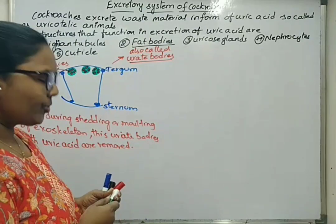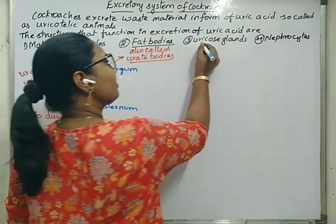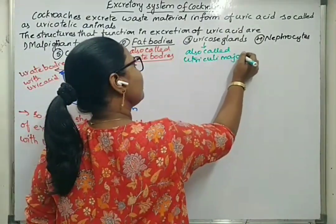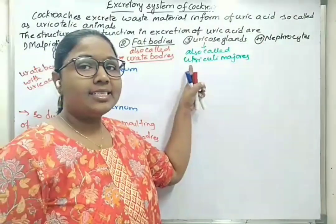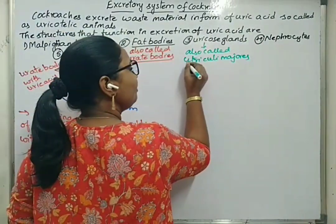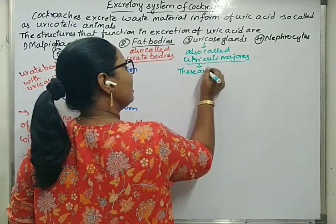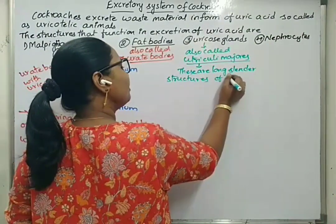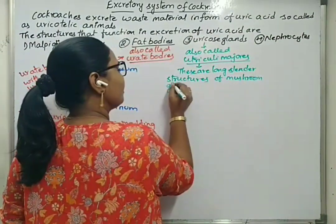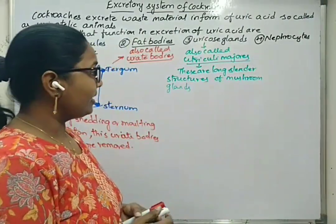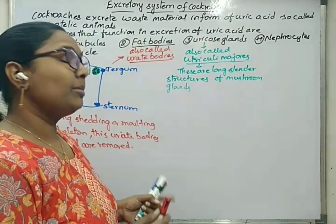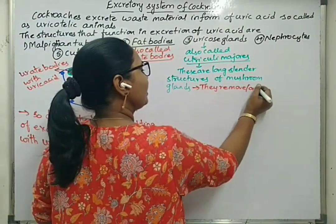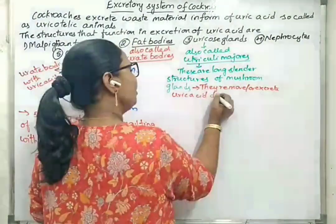Uricose glands are also called utriculi glands or utriculi majoris. These are special long slender structures present in the mushroom glands of male cockroach. They remove waste material by accumulating uric acid within them, and they excrete uric acid only during copulation.